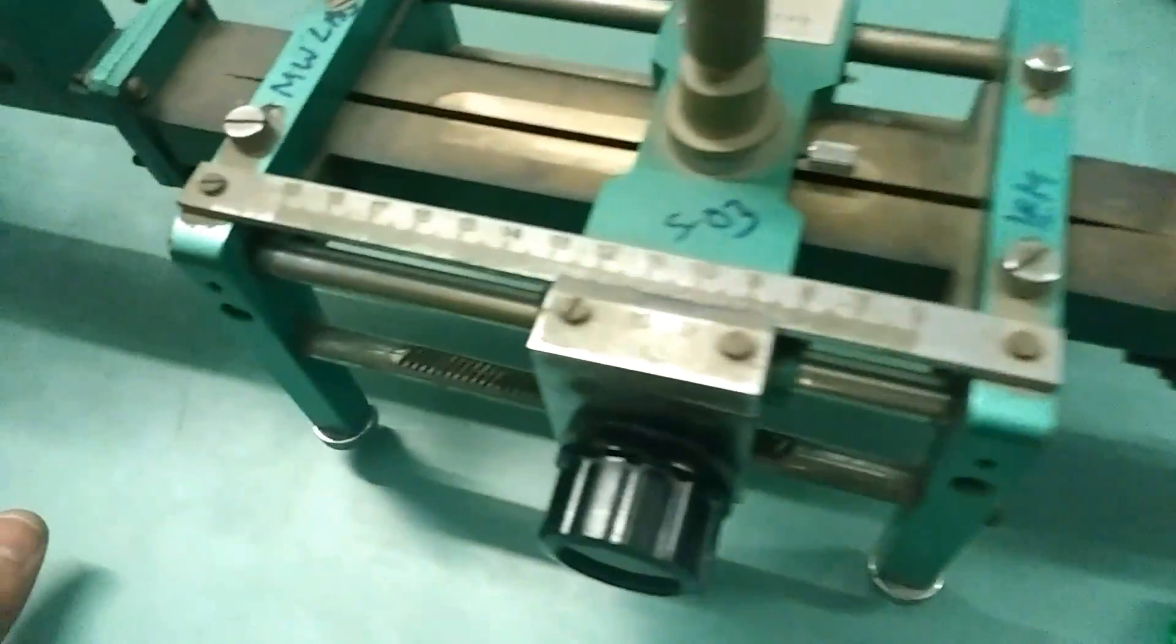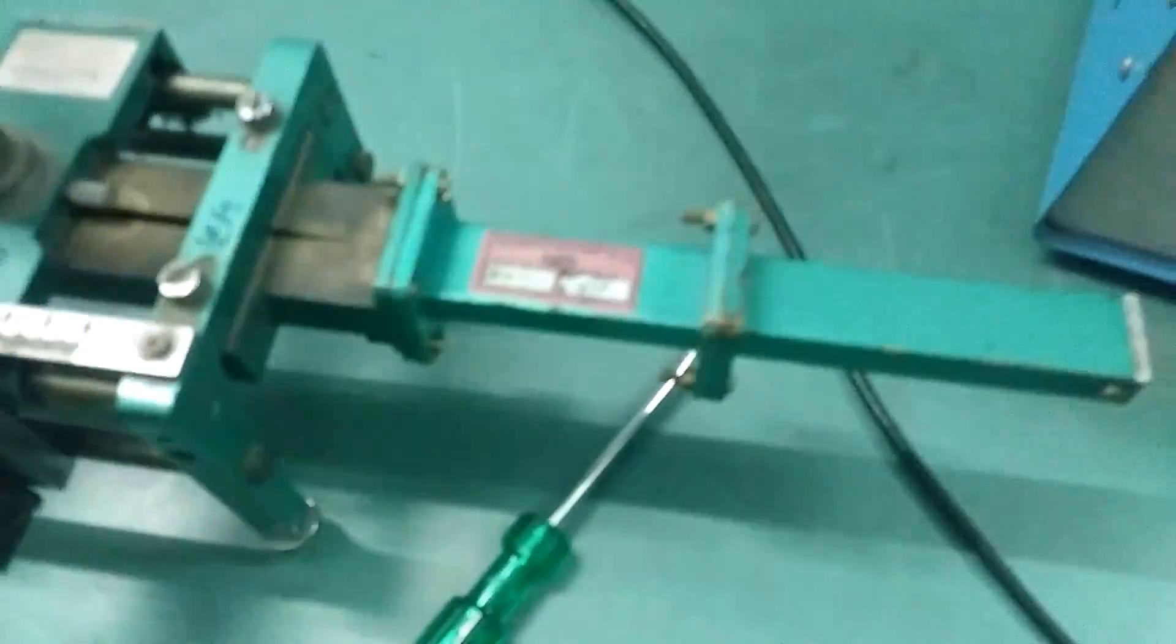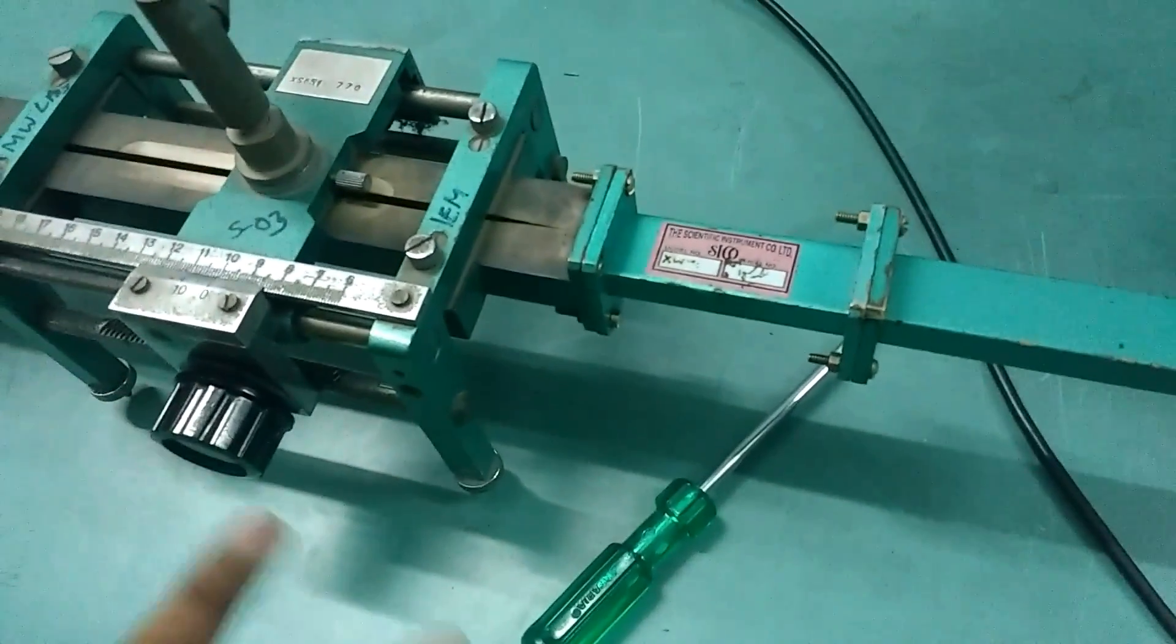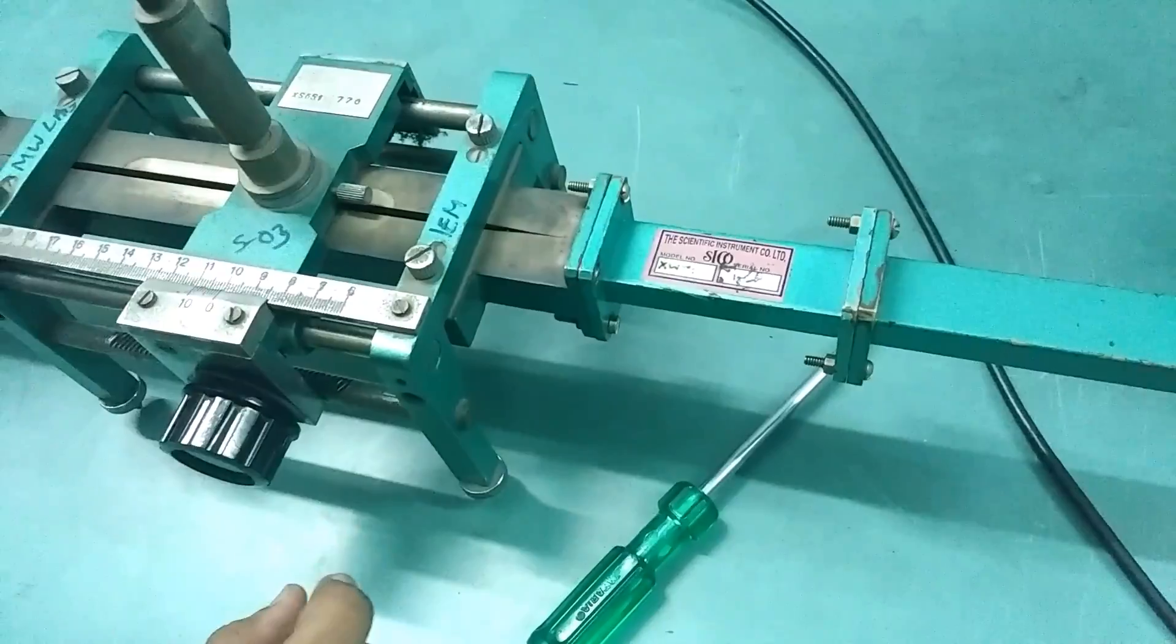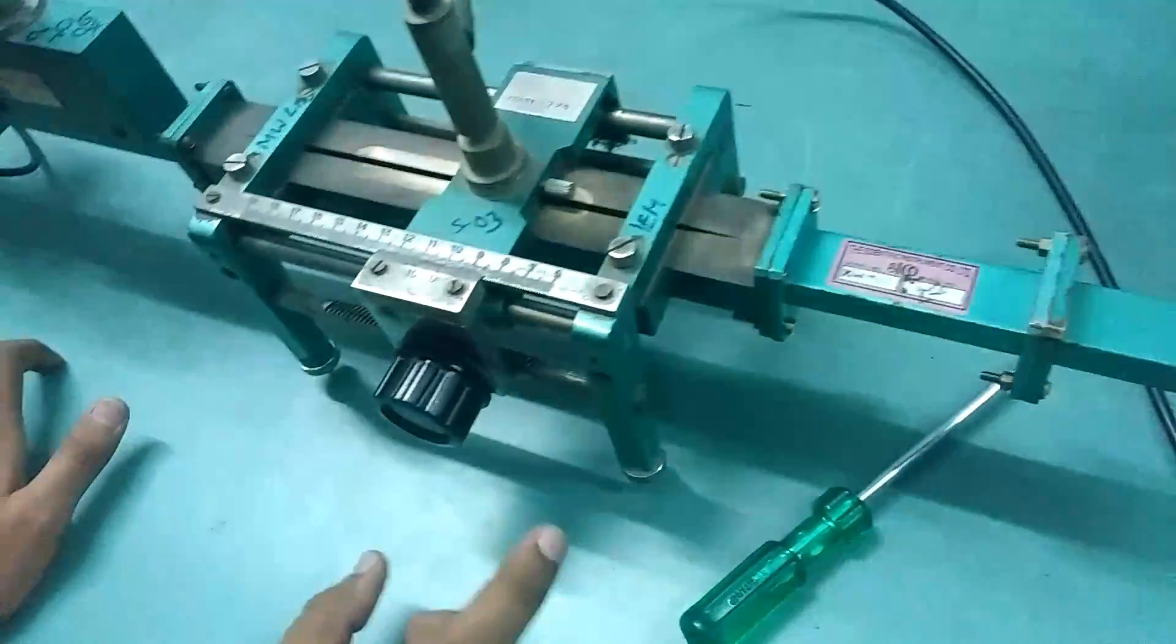This is the second minima position and we have done all this using the unknown load. We will note this position and these two readings will be used to find lambda g, which is 2 into the difference of the two.